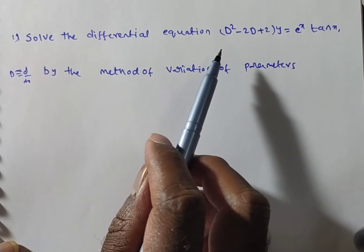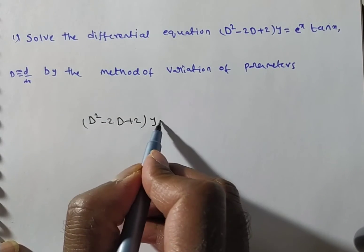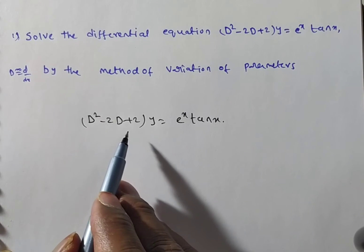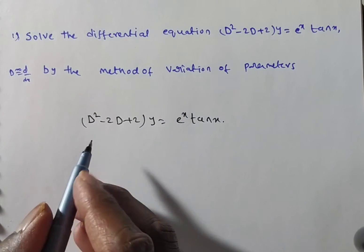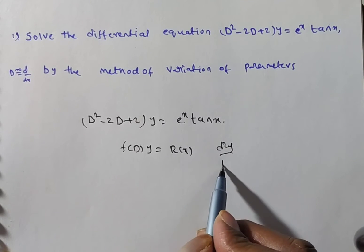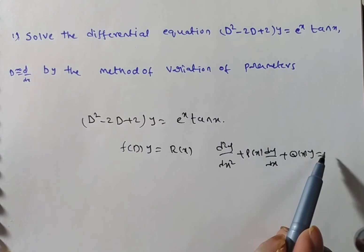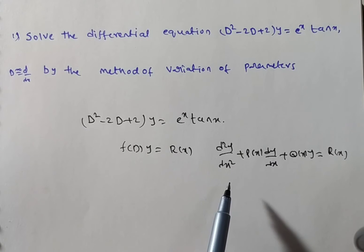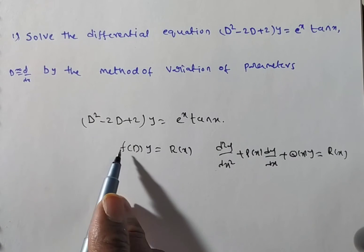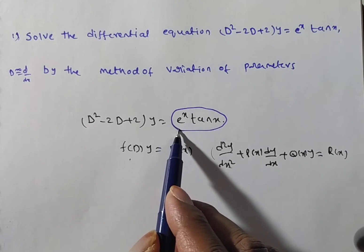The equation is given in operator form. Writing the given problem: (D² - 2D + 2)y = e^x · tan(x). The coefficient of D² is 1, so this matches the standard form of a second-order linear differential equation: d²y/dx² + P(x)·dy/dx + Q(x)·y = R(x). Here R(x) = e^x · tan(x).